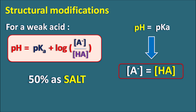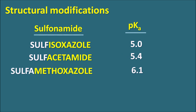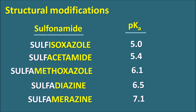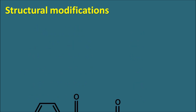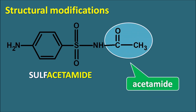Examples of sulfonamides with modified pKa values: sulfisoxazole has pKa ~5.0, sulfacetamide ~5.4, sulfamethoxazole ~6.1, sulfadiazine ~6.5, and sulfamerazine ~7.1. These pKa values are arranged close to urinary pH (~6), minimizing crystalluria risk. Sulfacetamide achieves its pKa of 5.4 through substitution of the amide nitrogen with an acetamide group.